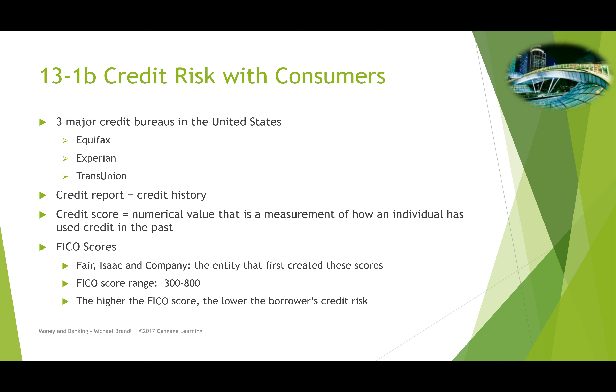You're given a credit score — a measurement of how you've used credit in the past. It takes into account things such as whether you make your payments on time, how many credit cards you have, how responsible you've been — and it goes back five years. These are called FICO scores, which comes from Fair Isaac and Company, the entity that first created those scores. The range for FICO scores is from 300 to 800; the higher the score, the lower the borrower's credit risk.